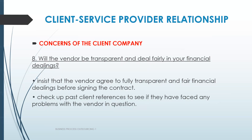Number eight: will the vendor be transparent and deal fairly in your financial dealings? Insist that the vendor agrees to fully transparent and fair financial dealings before signing the contract, and check past client references to see if there have been any problems with the vendor. A contract should be black and white. Both parties mean business when entering the contract, so make sure both are transparent financially — the client wants to reduce production costs, and the service provider wants to gain profit.